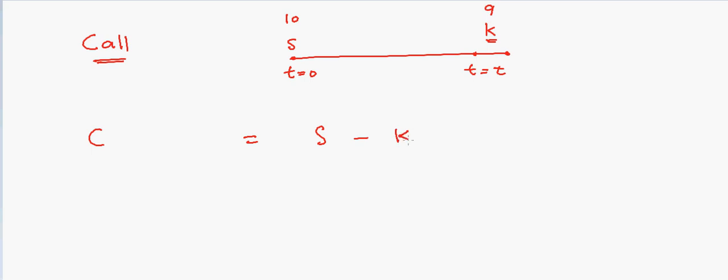So let's start with this. The value of call will be equal to S minus K. However, K we are paying at the later time, so what would be the value of K right now? That will be equal to K minus the interest rate.